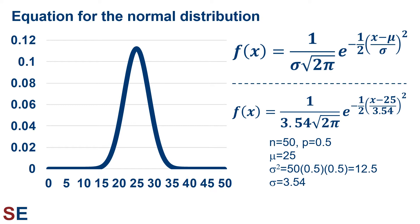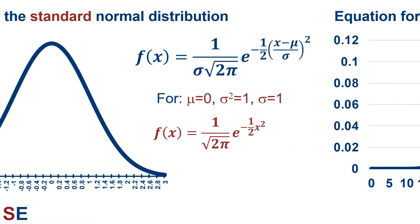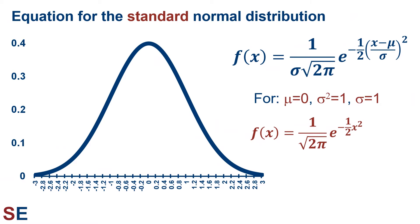This equation causes the normal distribution to be centered around the mean with a width that depends on the standard deviation. And because the overall area must be equal to 1, if the standard deviation is larger, then the height of the normal distribution is lower. The equation can be simplified if the mean is equal to 0 and the variance and standard deviation are both equal to 1. Under these conditions, we get a normal distribution called the standard normal distribution, which has the same shape but a much simpler equation: f(x) = 1 over the square root of 2π times e to the negative one-half x squared.